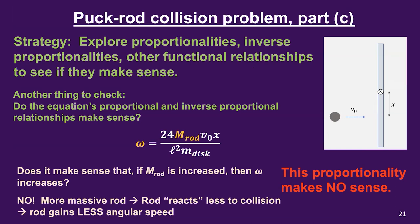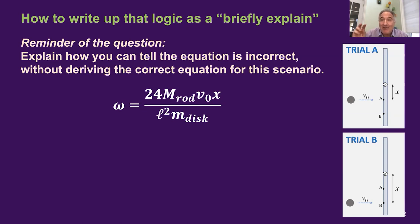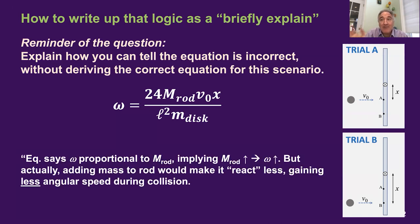Now, how do you summarize that complex logic to answer a 'briefly explain' question? Here's one possible brief answer: 'Equation says omega proportional to M-rod, implying if M-rod goes up, then omega goes up. But actually adding mass to the rod would make it react less, gaining less angular speed during the collision.' That's leaving out plenty of nuance, but it's enough for a 'briefly explain' to show you know what you're talking about.